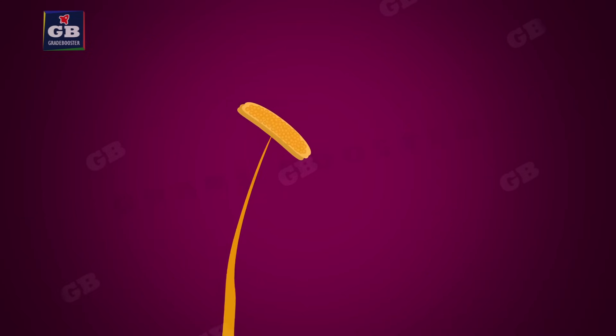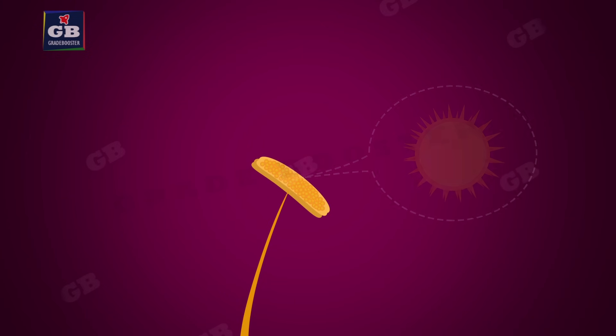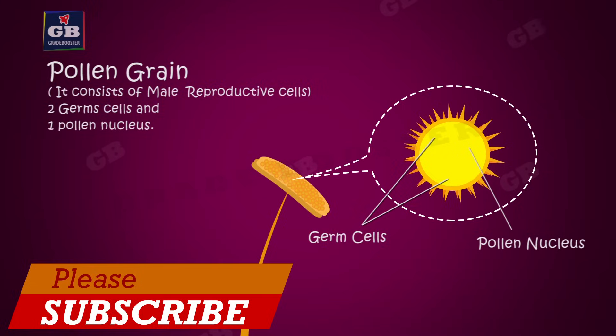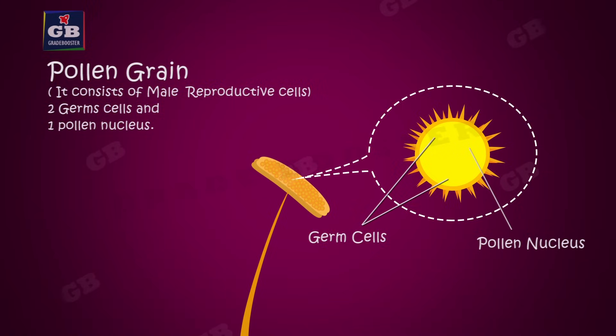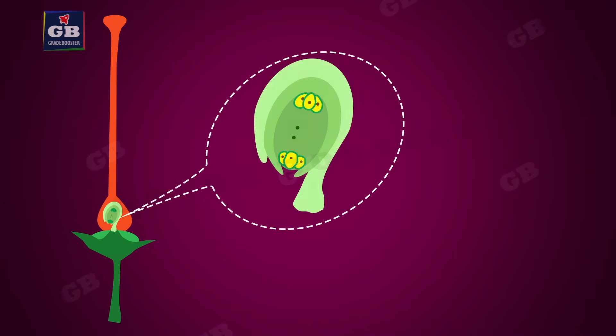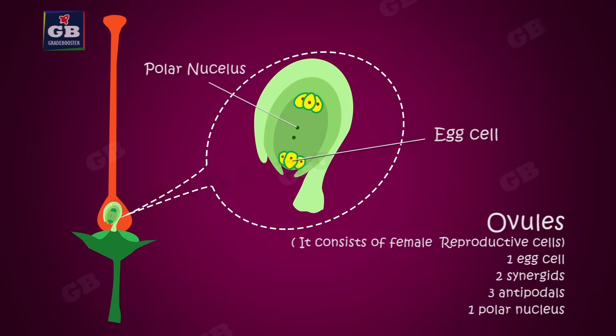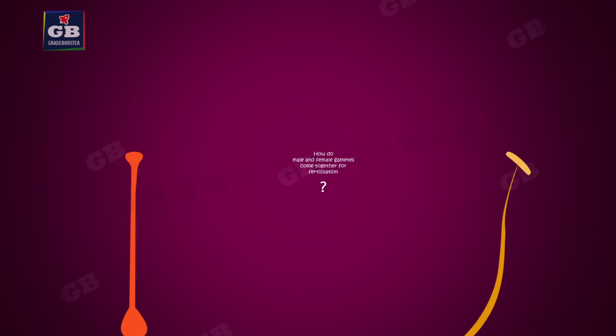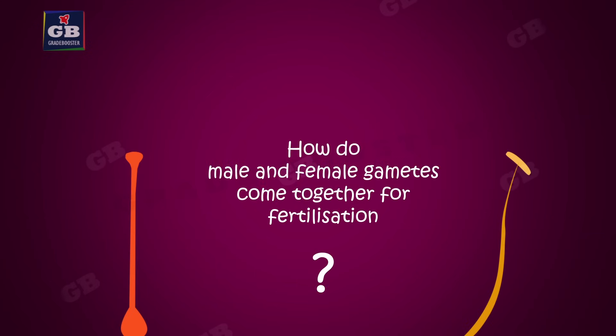The anther is the part where male reproductive cells are produced. It produces pollen grains that are yellowish in color. Each pollen grain contains two germ cells and one pollen nucleus. The ovary contains ovules, and each ovule consists of a female reproductive cell or egg cell. Since fertilization means fusion of male and female gametes, how do these male and female gametes come together for fusion?